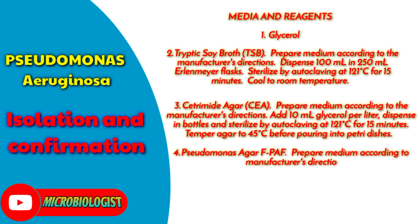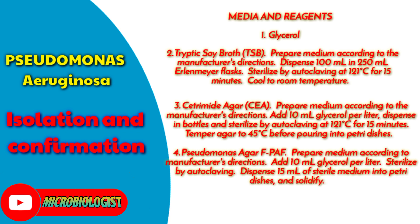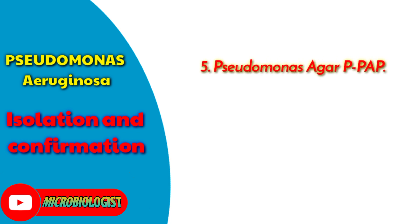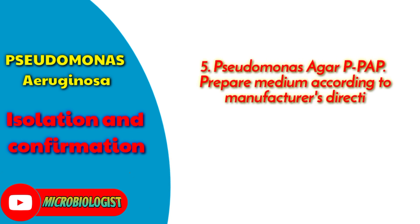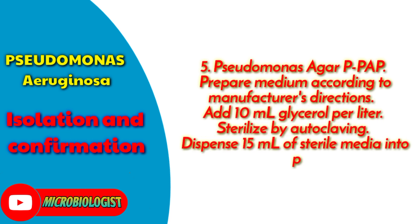4. Pseudomonas agar F (PAF): Prepare medium according to manufacturer's directions. Add 10 ml glycerol per liter. Sterilize by autoclaving. Dispense 15 ml of sterile medium into petri dishes and solidify. 5. Pseudomonas agar P (PAP): Prepare medium according to manufacturer's directions. Add 10 ml glycerol per liter. Sterilize by autoclaving. Dispense 15 ml of sterile media into petri dishes and solidify.